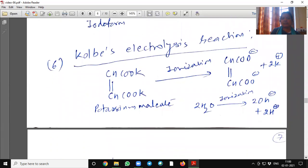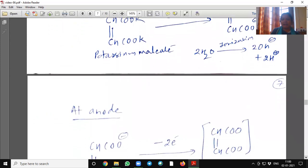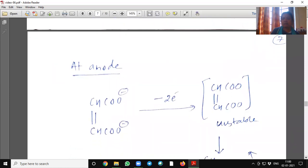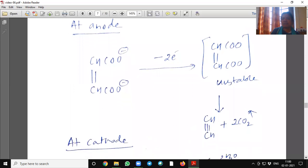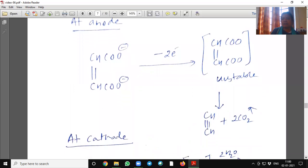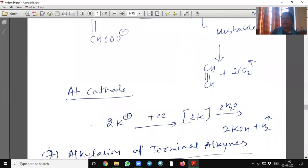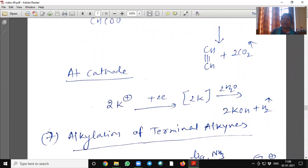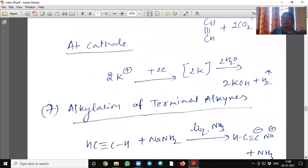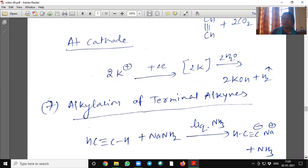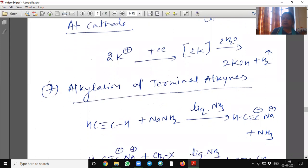Kolbe's electrolysis method. Potassium maleate when ionized will form anion and cation. This anion will go on at anode and it will lose its two electrons and it will form unstable intermediate. And this unstable intermediate will dissociate into acetylene and two moles of carbon dioxide. At cathode, two moles of potassium ion will gain two electrons and it will form intermediate.